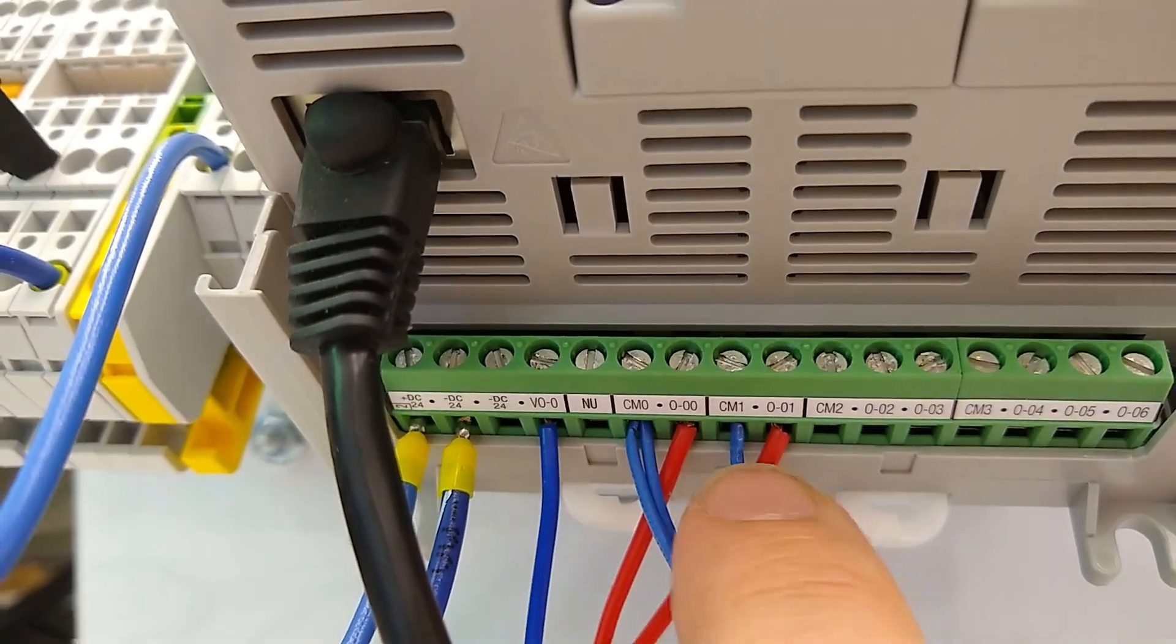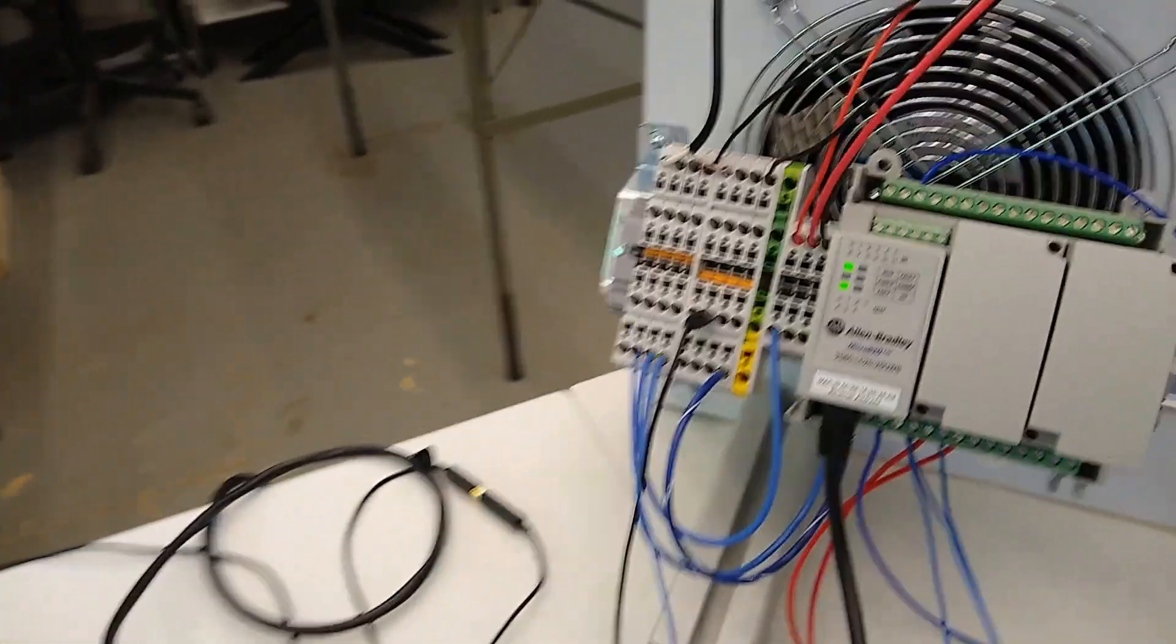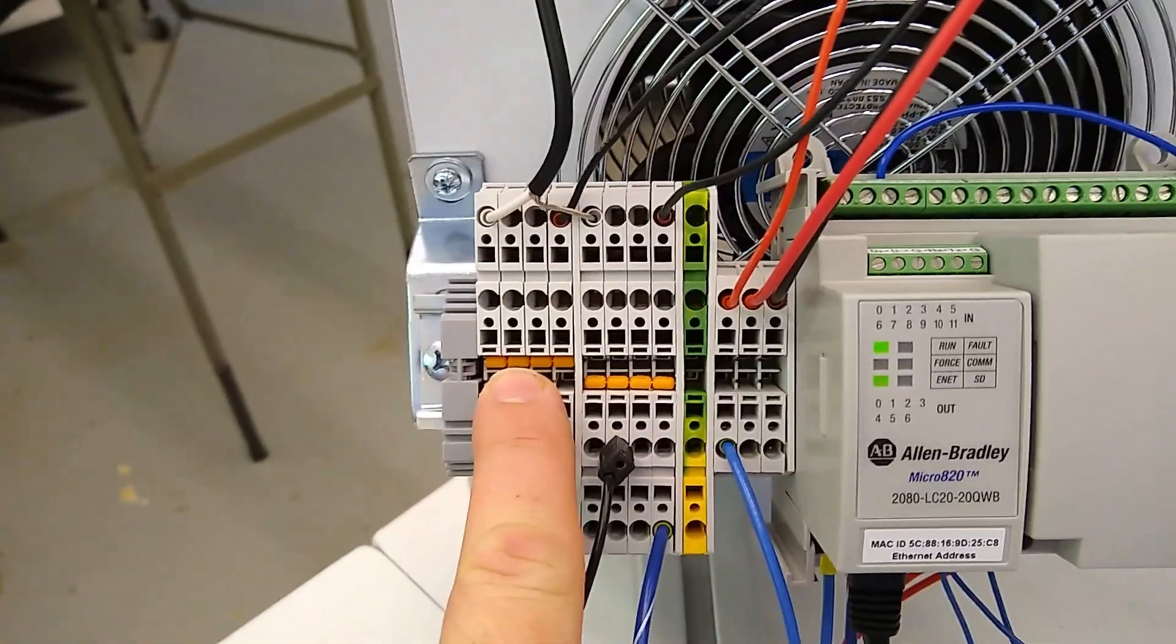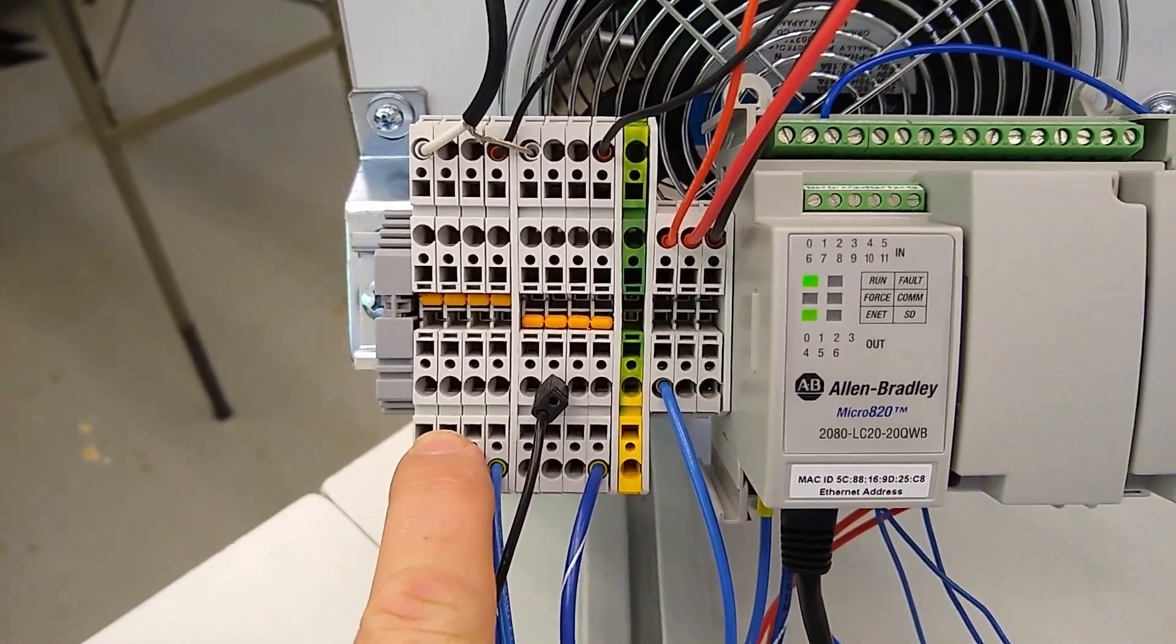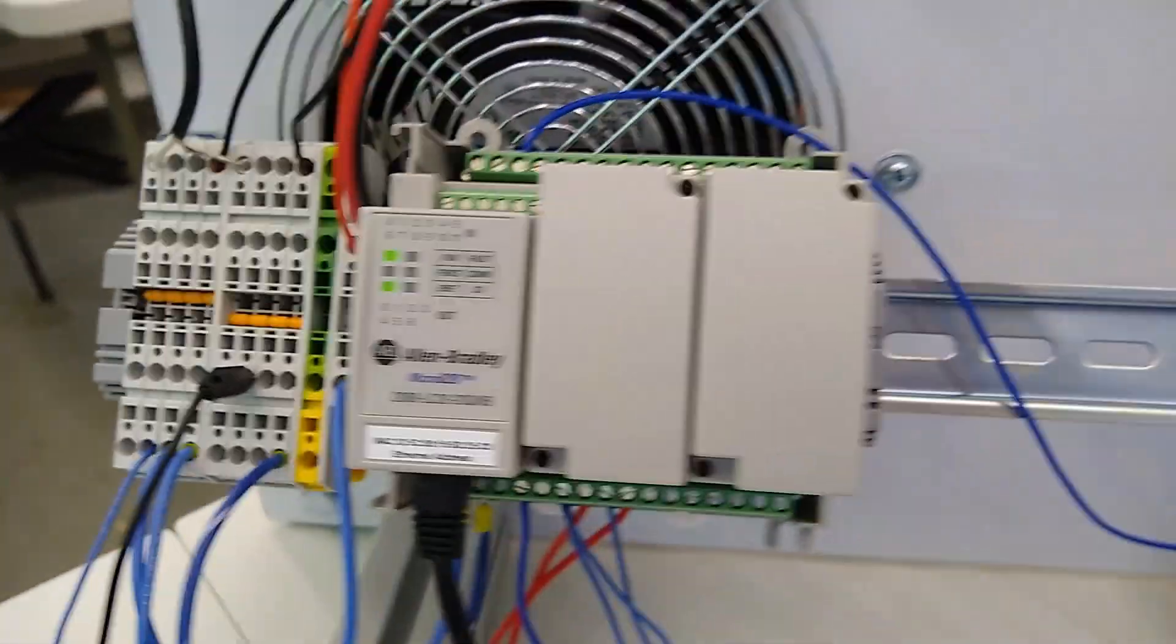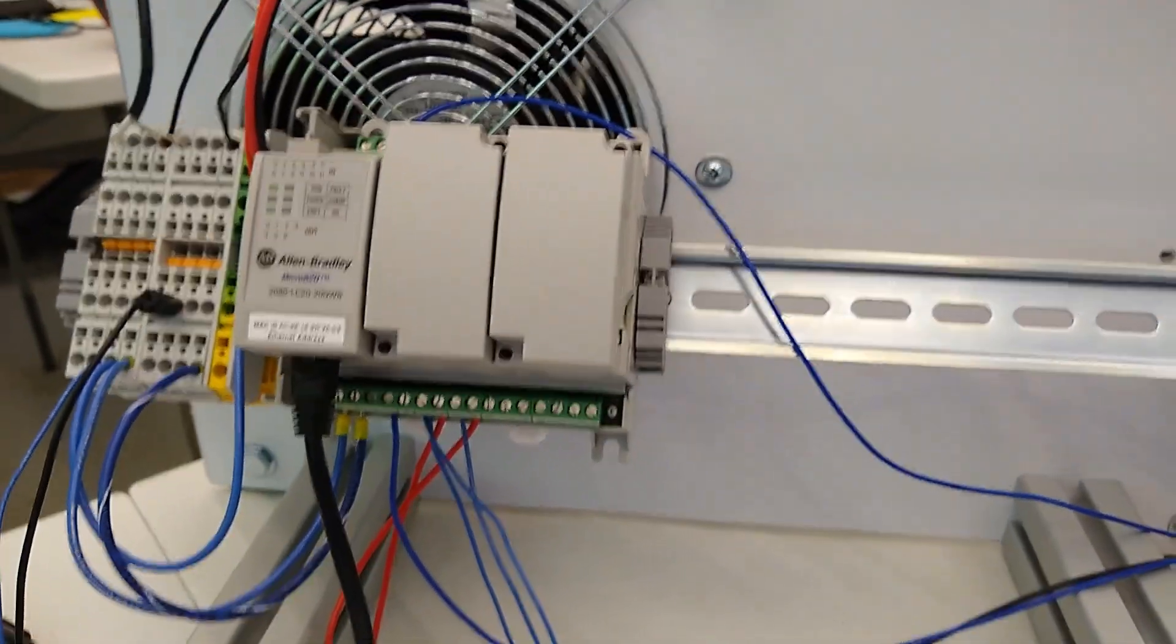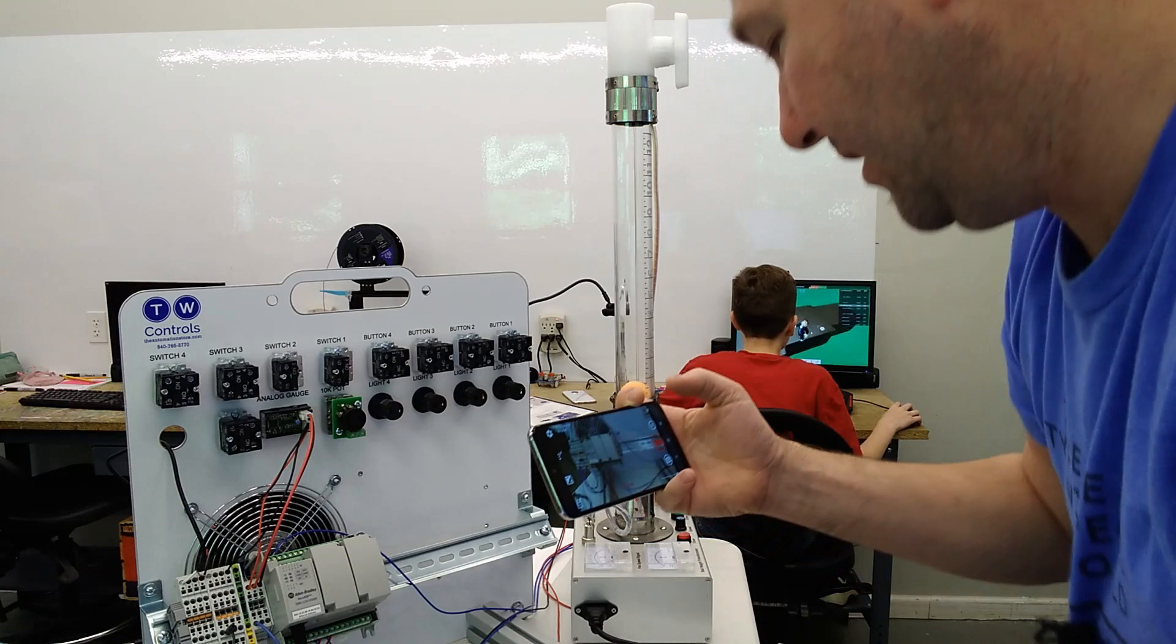Also the CM0 and the CM1 right here, both of those are going over to the left set of terminal blocks which is our plus of our 24 volt power supply. So that is all the wiring that we need to do to interface these two trainers.